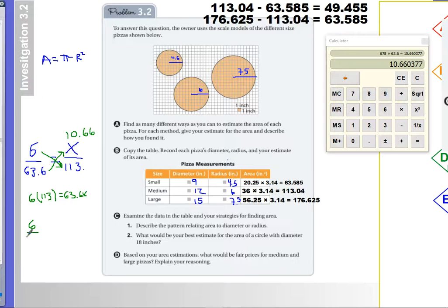Using that same logic, so we have 6 over 63.6, and that's going to equal 176 over, let's say, P for price.